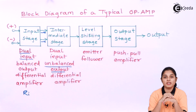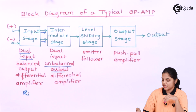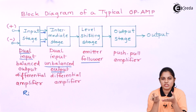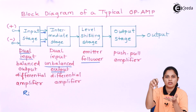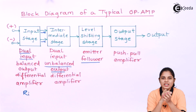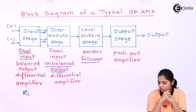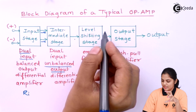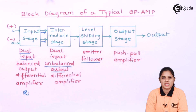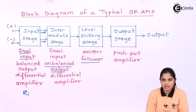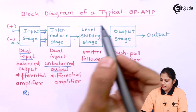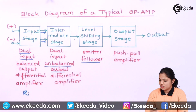The level shifting stage is simply an emitter follower — a BJT amplifier used as an emitter follower. This means it follows the same output but changes the DC level of the input signal coming into it. The significance of the level shifting stage is to shift the DC level of the signal below ground, and that signal is then provided to the output stage.